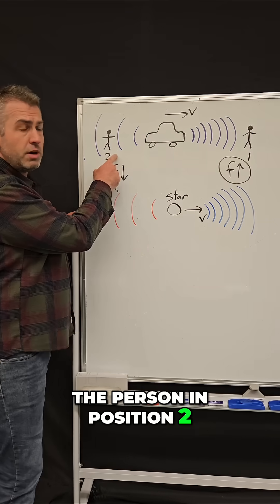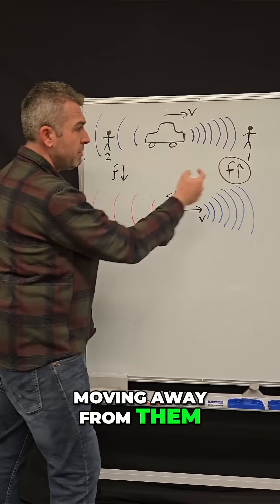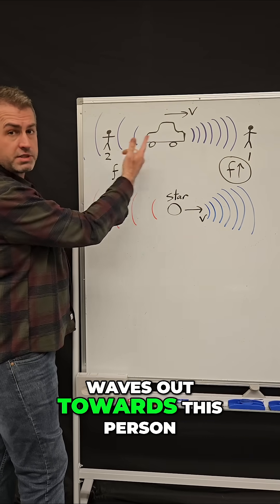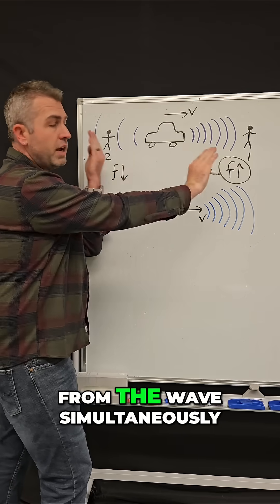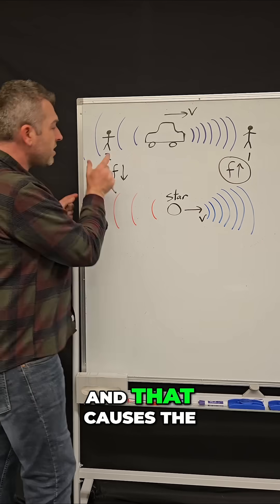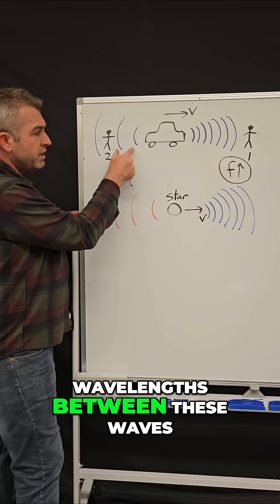Now, the person in position two, since the car is moving away from them, as it sends those waves out towards this person, the car is actually getting further and further from the waves simultaneously, and that causes the wavelengths between these waves to actually get really big.